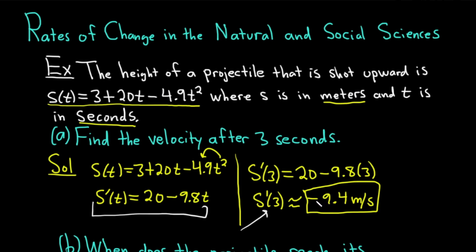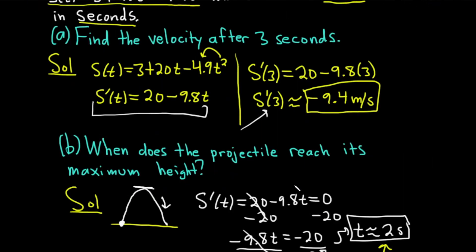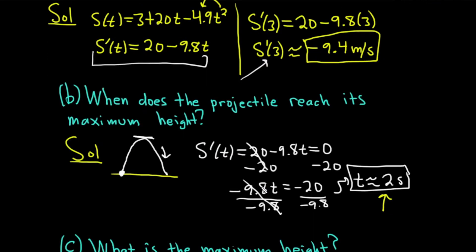That was somewhat enlightening because it was a negative answer and we're shooting something up in the air. So why would it be negative unless it's already on its way down at 3 seconds, which Part B actually confirmed. Part B says, when does the projectile reach its maximum height? So if this yellow line is the ground and you shoot something up, it's going to go up and eventually it'll stop just for a brief second and then start coming back down. That brief moment when it stops, that's when the velocity is zero.